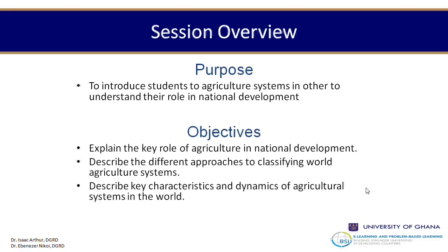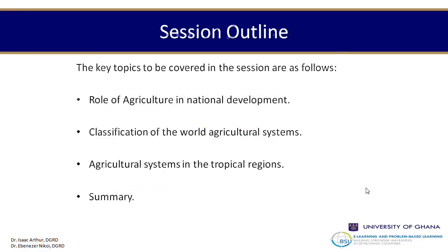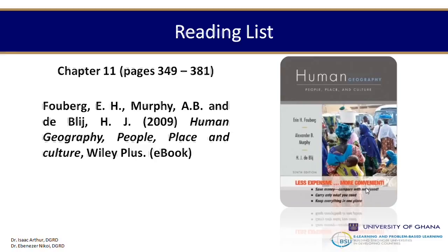The outline of this session will take this format. We'll look first at the role of agriculture in national development, the classification of world agricultural systems, the agricultural systems in the tropical regions, and then the summary. I encourage you to read chapter 11, pages 349 to 381 of this particular textbook, which you are very familiar with.